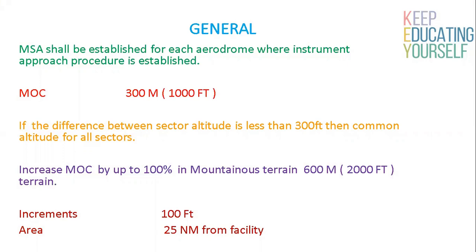A Minimum Altitude shall apply within a radius of 25 nm of the homing facility on which the instrument approach is based. The Minimum Obstacle Clearance when flying over a mountainous area should be increased by as much as 1000 feet.